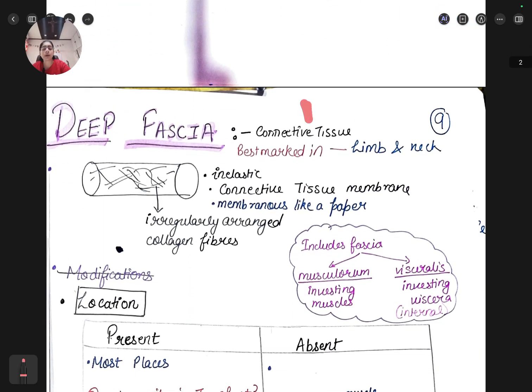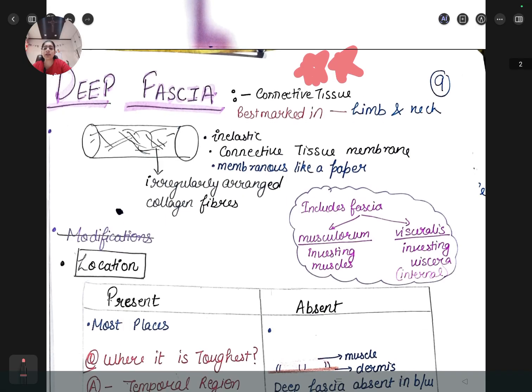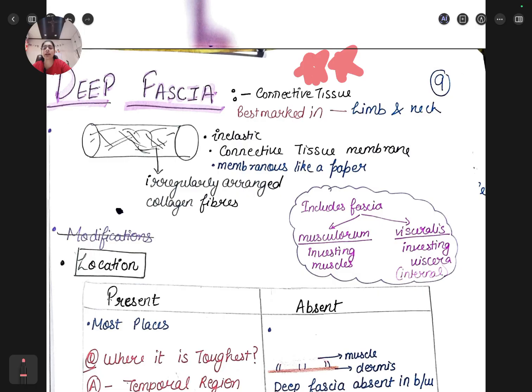Next comes very important five star question that is the deep fascia. In deep fascia the main question is the modifications of deep fascia and it usually comes as a short note. It is connective tissue best marked in limbs and neck. It is inelastic connective tissue membrane with a paper-like appearance. When you will do the dissection you need to identify which is superficial fascia and which is deep fascia.